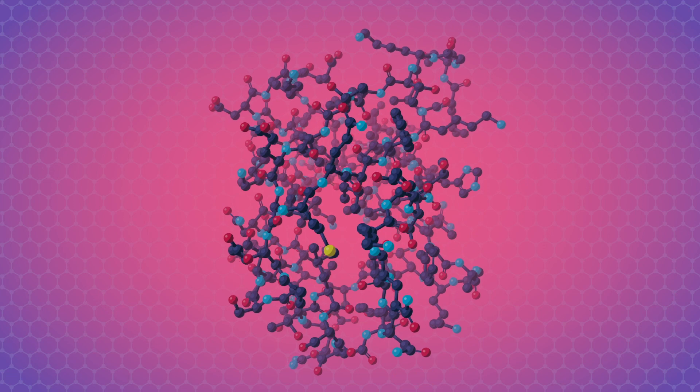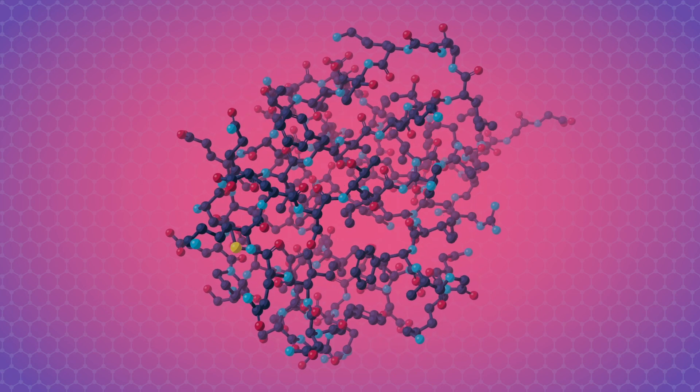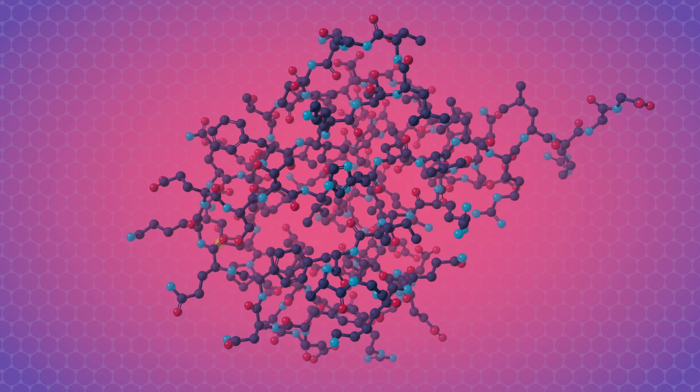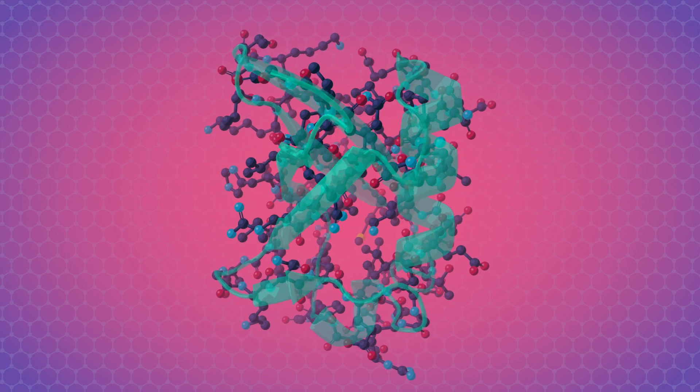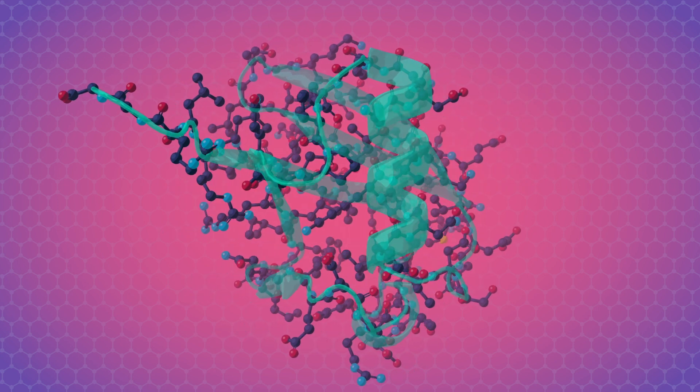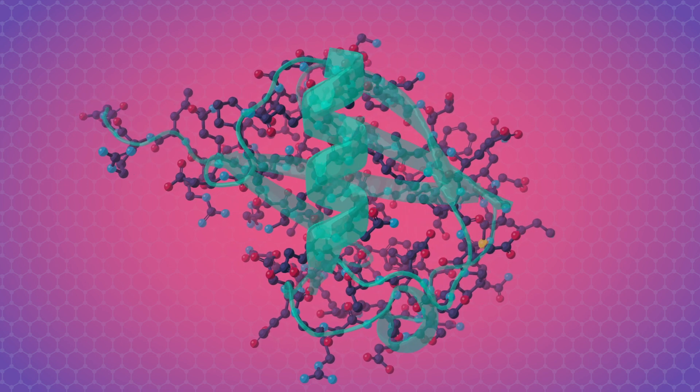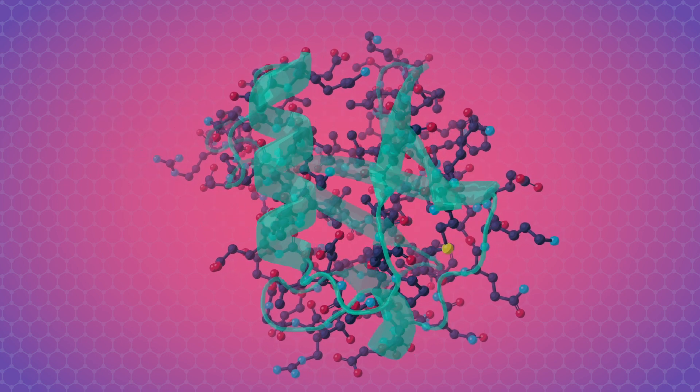When a polypeptide folds up into more than just a single continuous alpha helix or beta sheet, the overall 3D shape is its tertiary structure. Here, side chain interactions begin to play a role, both in the shape and what these protein machines can do.